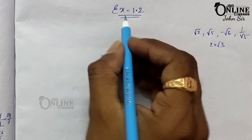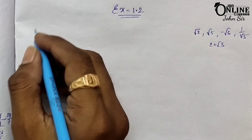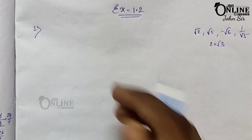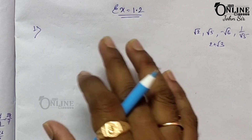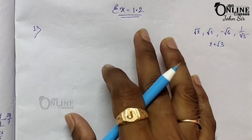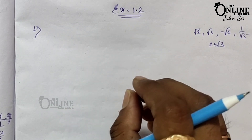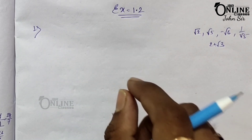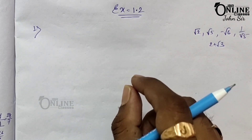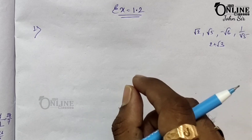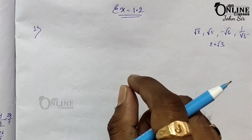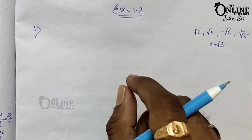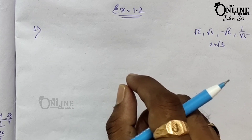So here in Exercise 1.2 is the first problem. This kind of problem in Exercise 1.2 is a little bit tough. It is fully based on theorem, so you have to listen very carefully, otherwise you can face some kind of problems.